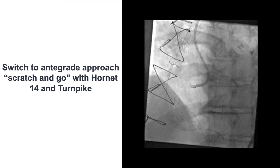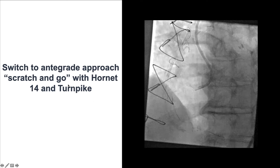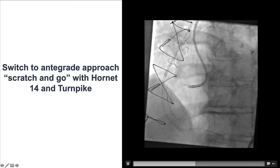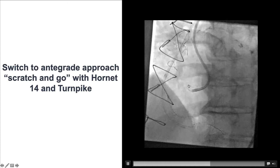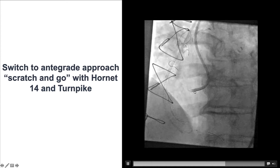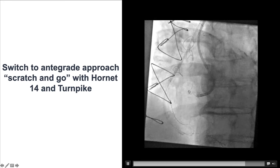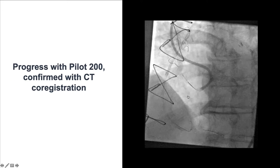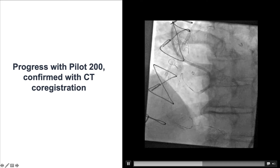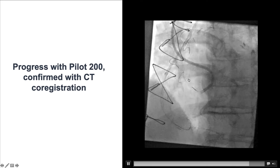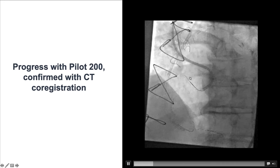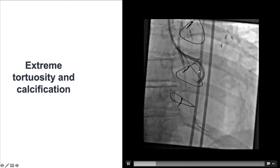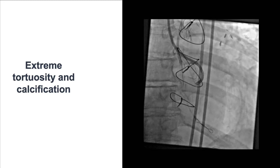We had difficulty making progress, so we decided to switch back to the antegrade approach using the Scratch and Go technique. In this technique, a stiff guide wire creates a sub-intimal entry point, and then a microcatheter and polymer-jacketed wire are inserted to track through the sub-intimal space. A Pilot 200 was advanced — the wire course looked unusual, but based on co-registration we confirmed it was the true course of the vessel, going up and then turning down. Co-registration provided reassurance we were in the right place. Additionally, using a knuckle wire provides a safety margin, as knuckles are unlikely to perforate the vessel.